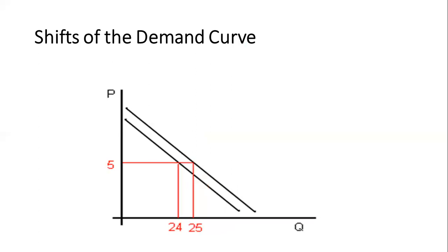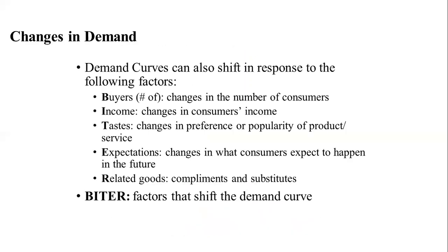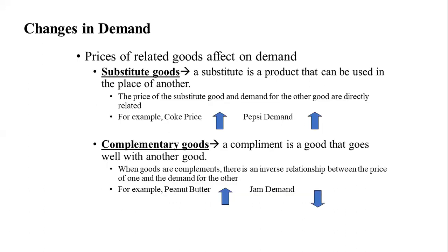In the real market we also have to consider the supplier. Changes in demand — or shifts in demand — can be summarized using the BITER framework: B for buyers (population), I for income, T for taste and preferences, E for consumer expectations of future changes, and R for related goods, which includes complements and substitutes.